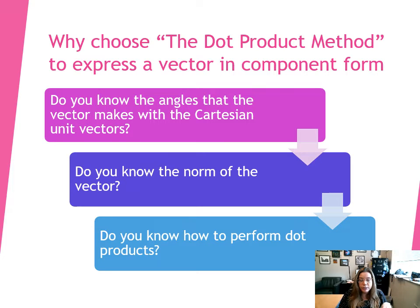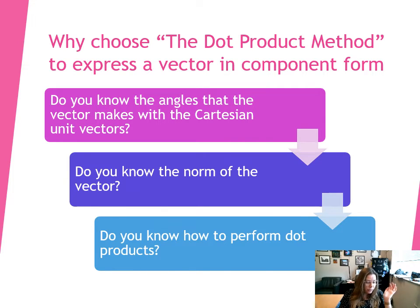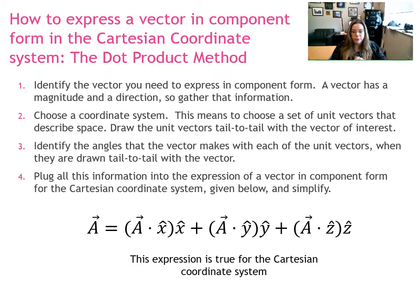Here are some questions you should ask yourself when trying to determine which method to use to put a vector into component form. To do a dot product, you need to know the angles that the vector makes with the Cartesian unit vectors when placed tail-to-tail, and you need to know the norm of the vector. If you know those things and know how to do dot products, these three conditions must all be true for you to choose the dot product method. If you said yes to all of them, we can proceed into the procedure of how to put a vector into component form.